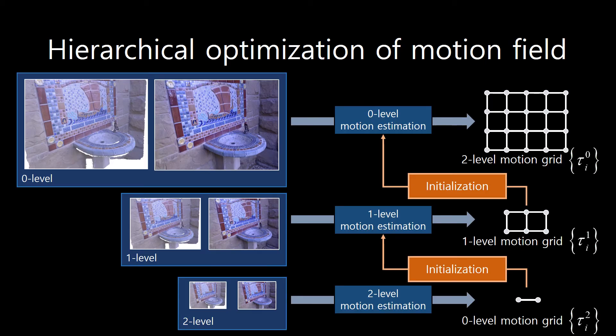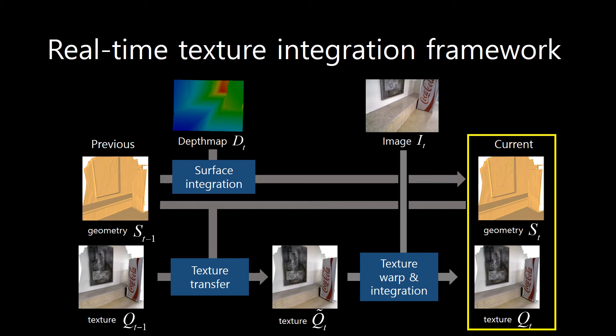We optimize the camera motion grid in multi-level from coarse level to fine level. For each level, we optimize the camera motion grid and use it to initialize the next level motion grid. Finally, we warp the current image to be aligned with the previous texture map, then blend the current color image with the previous texture map together, thus updating the current texture map.